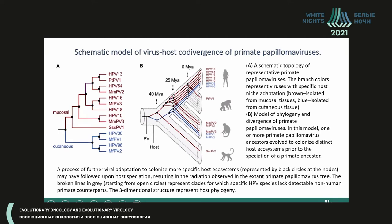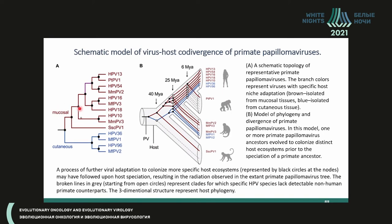Here we see again the difference in ecological niche. First, the difference between the mucosal and cutaneous ecosystems occurs. Then, within the mucosal group, we have different speciation among the hominids and other non-human primates.